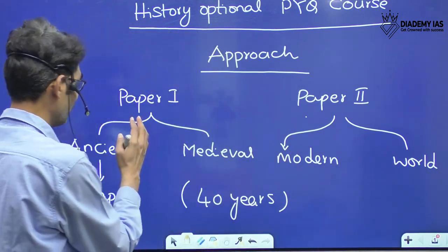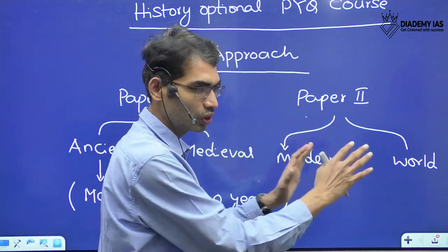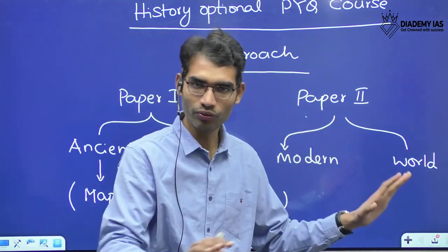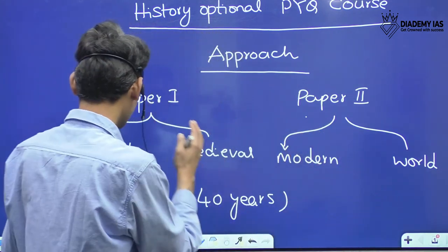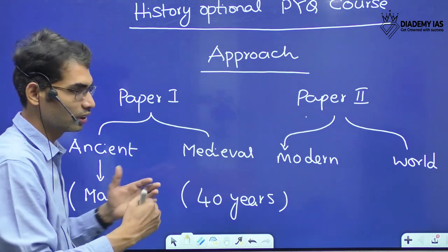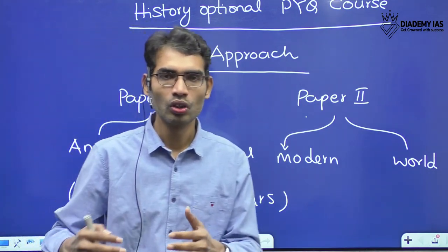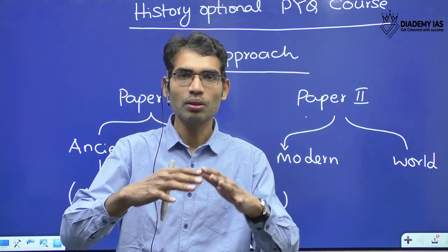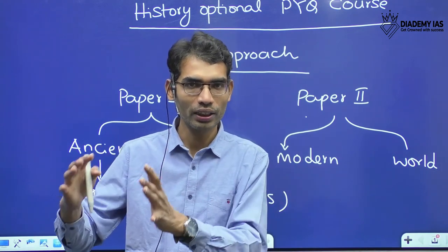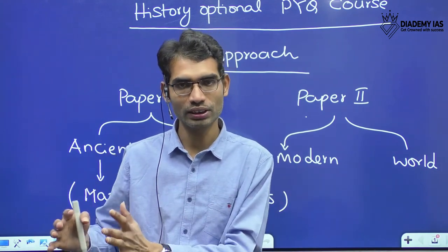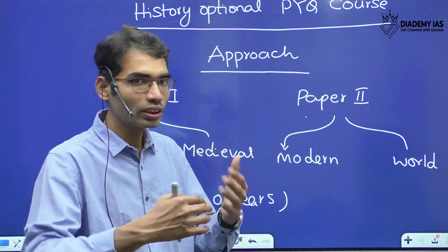We will segregate all the ancient questions, medieval, modern, and world questions — that is the first segregation. And again, when it comes to Ancient India, we will go syllabus-wise. We will take all the Mauryan questions in one set, all the Gupta-related questions in one set — likewise, chapter-wise.